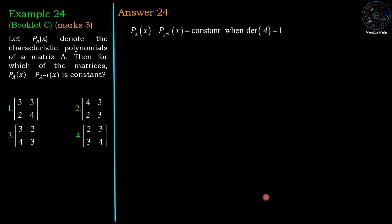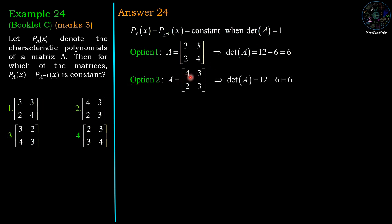So we will check this condition for our given options. First option [[3, 3], [2, 4]], determinant is 12 minus 6 which is 6 and which is not 1, so first option is wrong. For the second option [[4, 3], [2, 3]], determinant value is 6, so which is also wrong.